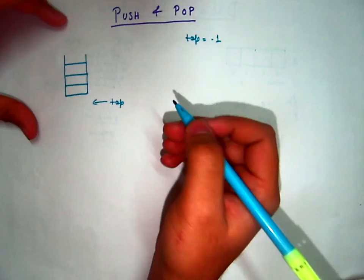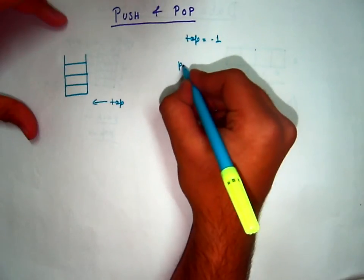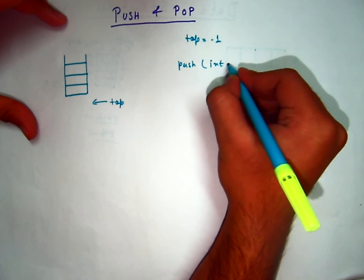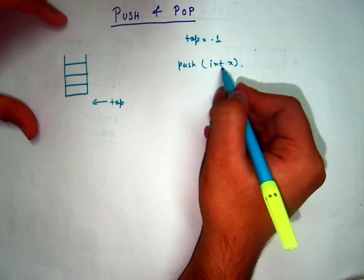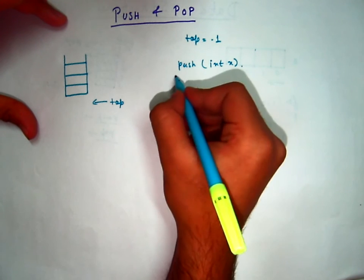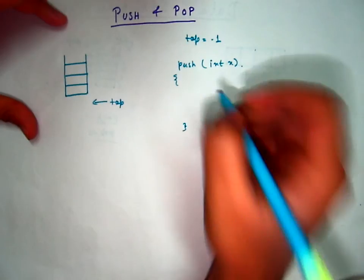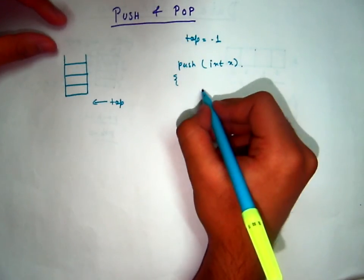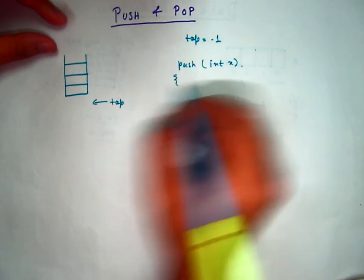Let's see what the push function will do now. Push function takes a parameter, this can be integer, this can be character based on your requirement. Now in the push function what we have to do is enter the element in the stack.